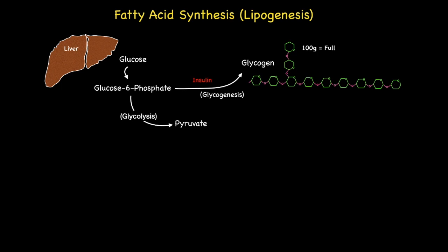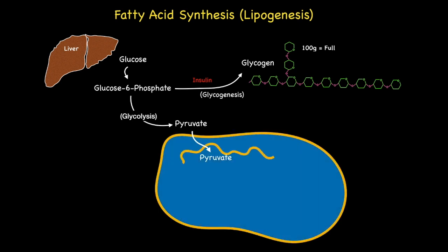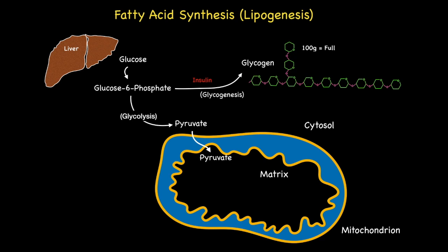The pyruvate is then shuttled from the cytosol and into the matrix of mitochondria. Within the matrix, the pyruvate is decarboxylated to give carbon dioxide. It is then combined with coenzyme A to give the common intermediate of metabolism known as acetyl-CoA, which also happens to be the input and starting material for fatty acid synthesis.